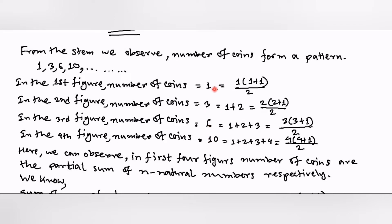In the first figure the number of points is 1, in the second figure it is 3, then 6, then 10. Those who have done partial summation know how to do it. I'm showing it in a short way. We differentiate the numbers 3, 6, and 10: 3 can be written as 1+2, 6 as 1+2+3, 10 as 1+2+3+4. We can convert 1+2 to 2(2+1)/2, then 3(3+1)/2, then 4(4+1)/2, and the first term as 1(1+1)/2. If we simplify, we find 1, 3, 6, 10 respectively.